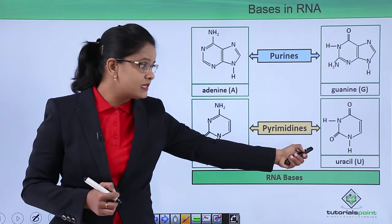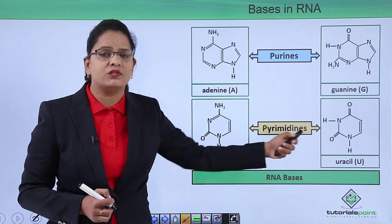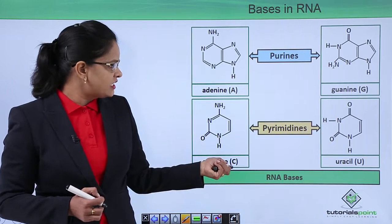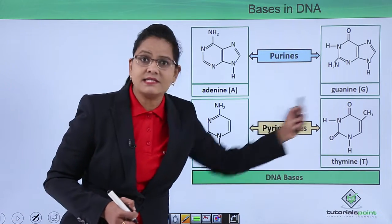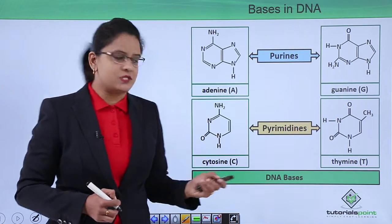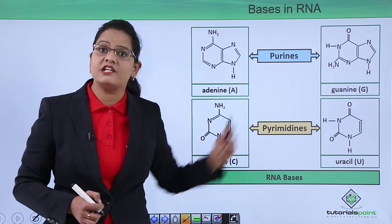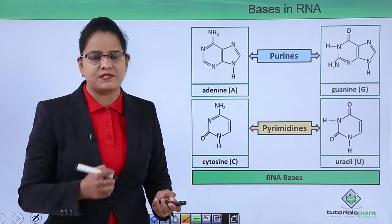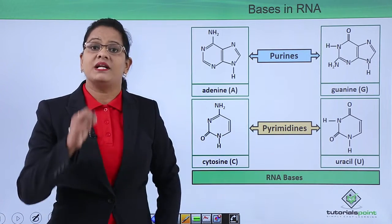The difference between thymine and uracil: in thymine, a CH₃ group is present, whereas in uracil the CH₃ group is absent. This is the only chemical difference between them, but this difference is very significant in the formation of the nucleic acid structure.